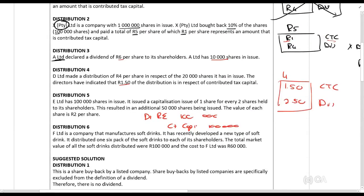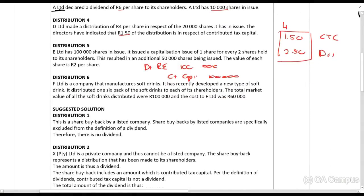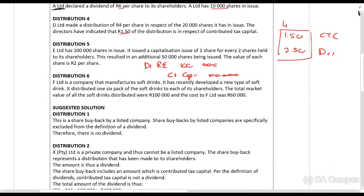Distribution 6: F Ltd is a company that manufactures soft drinks. It has recently developed a new type of soft drink. It distributed one 6-pack of the soft drinks to each of its shareholders. The total market value of all the soft drinks distributed was 100,000 rands, and the cost to F Ltd was 60,000.